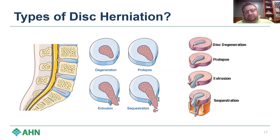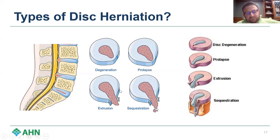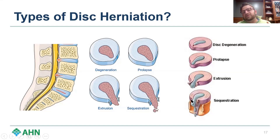In terms of disc herniation nomenclature, treatment is very similar regardless of type. A simple degenerative disc bulge is the mildest form. Prolapse is worsening bulging that may compress the nerve root. Extrusion is where disc material comes completely out of the annulus. Sequestration is where the entire nucleus exits and becomes separated from the remaining disc contents.